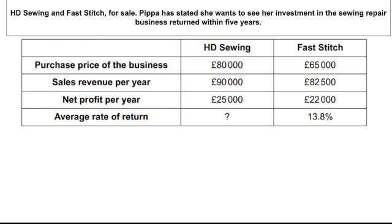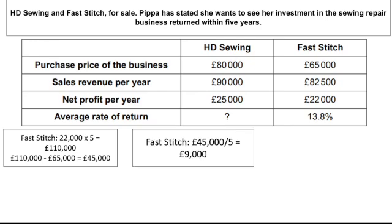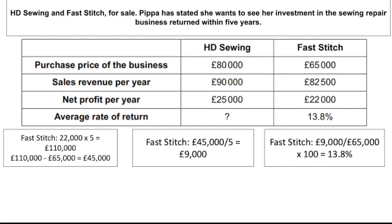You've got $22,000 and it says returned within five years. So $22,000 times by five gives us $110,000. Then step one: $110,000 minus $65,000 gives us $45,000, with the inclusion of the cost of the company — this investment is actually buying the company. Then we need the average annual profit: $45,000 divided by five gives us $9,000. Then the average rate of return: $9,000 divided by $65,000 times by 100 gives us 13.8%.